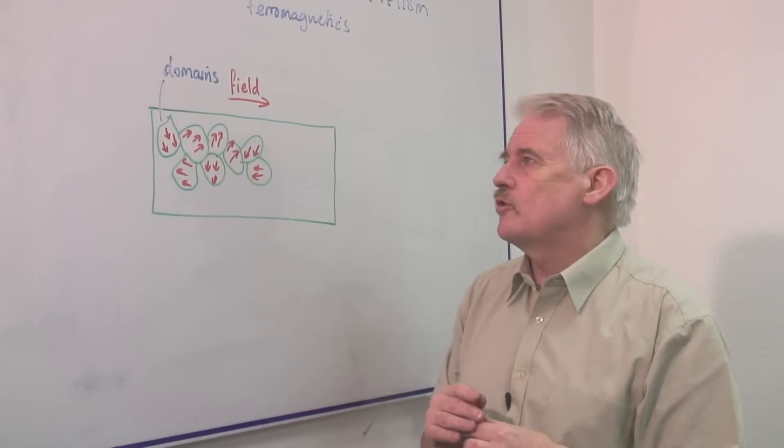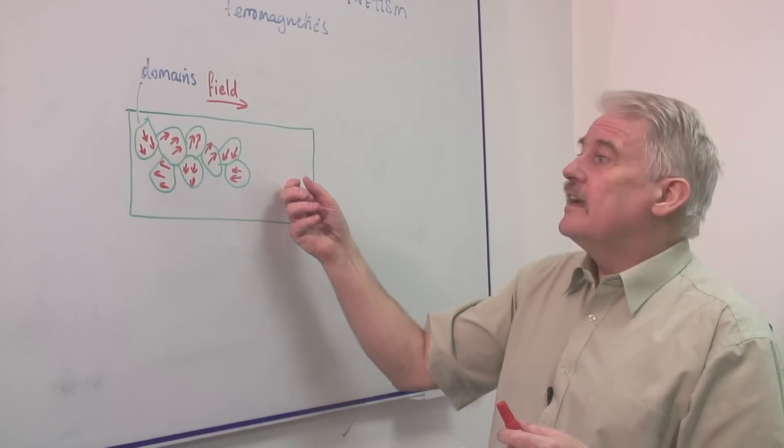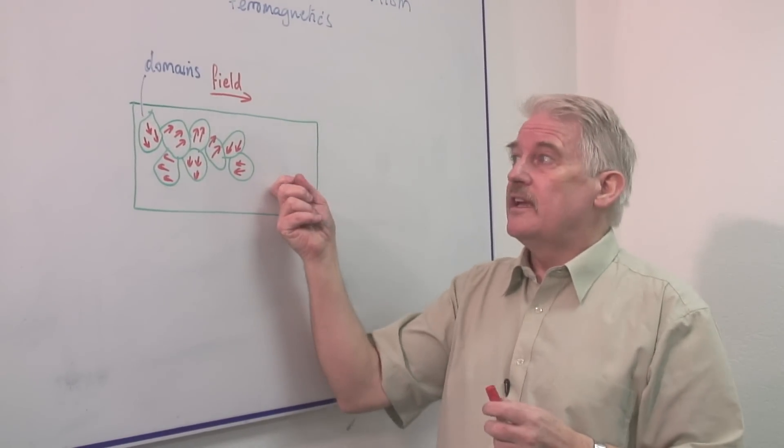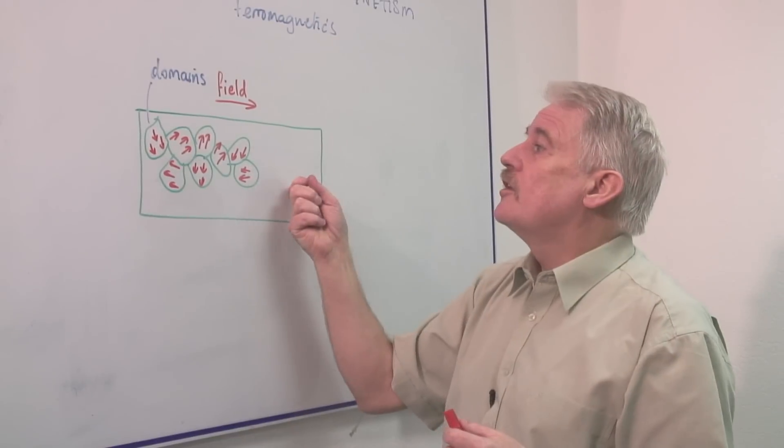In other words they don't magnetize at all. So that in a very simple form is the theory of domains and how a ferromagnetic material becomes magnetic.